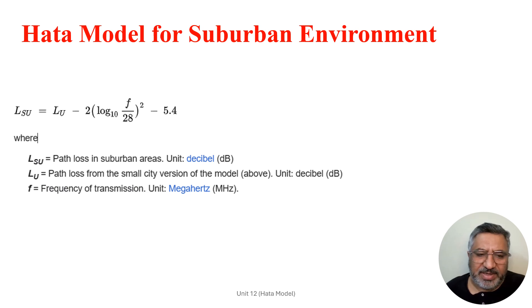LSU most of the time is less than LU, with one factor which is square of the frequency. In other words, path loss is subtractive with the square of the frequency. So suburban environment is more directly related to the frequency in square form.